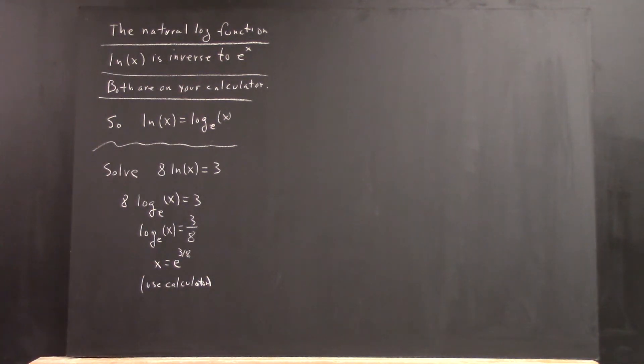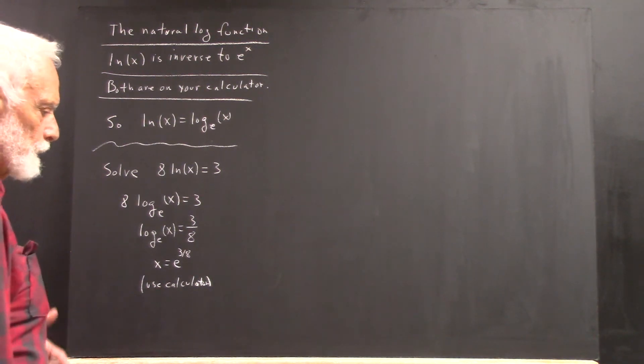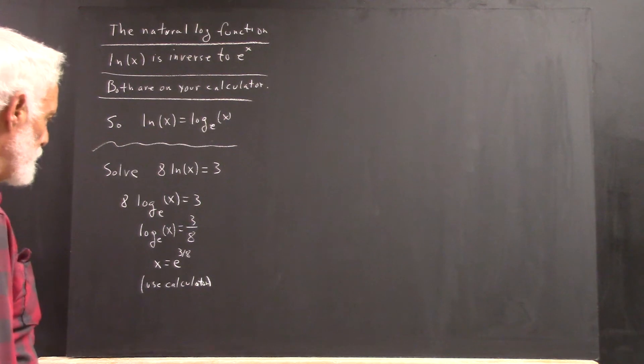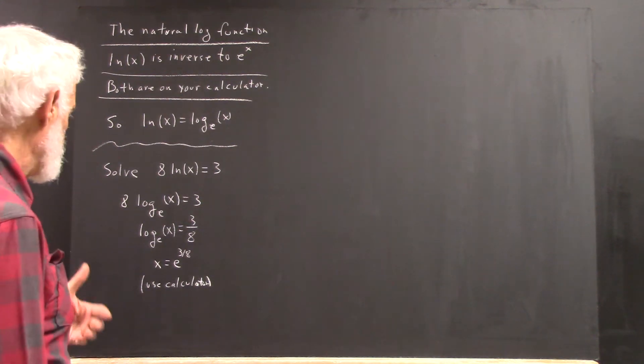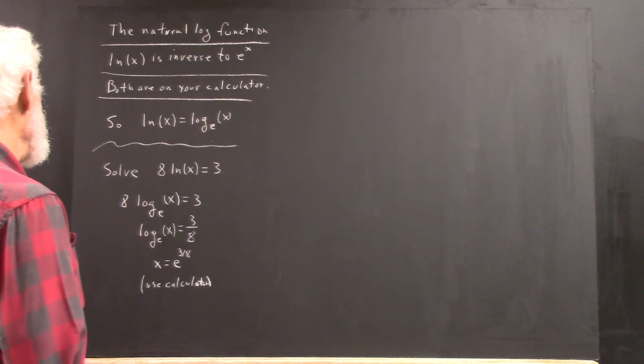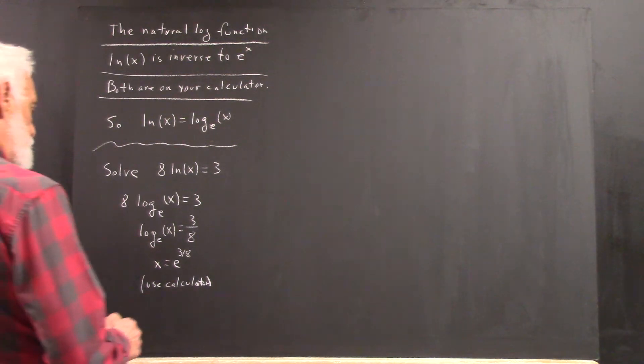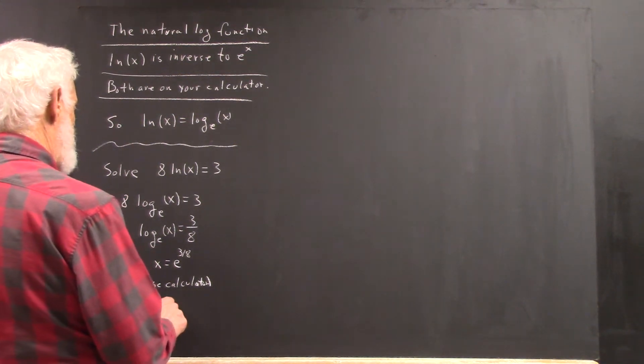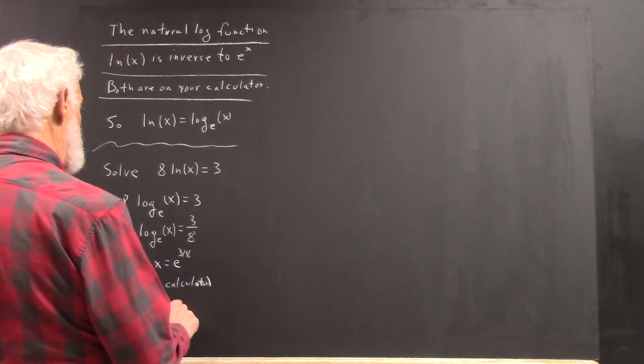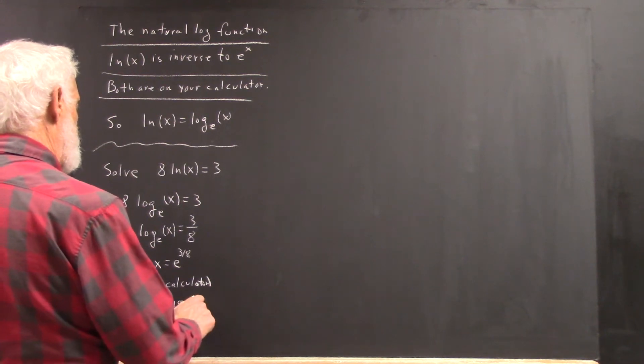I'll do a rough estimate. The square root of e is around 1.7 because 1.7 squared is 3.89, which is pretty close to 2.71. The 3 eighths power is going to be a little bit less than that. So I'm going to say x is maybe about 1.5.